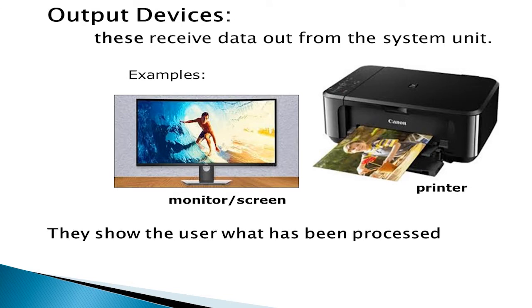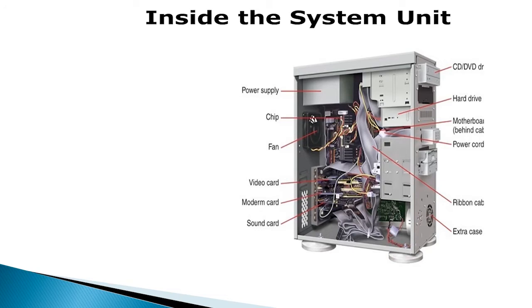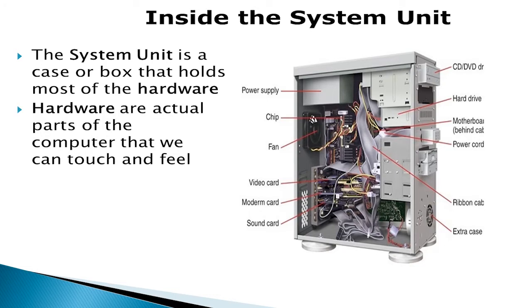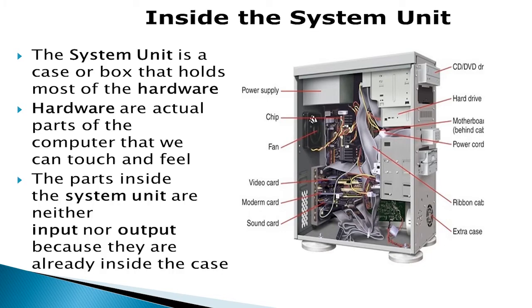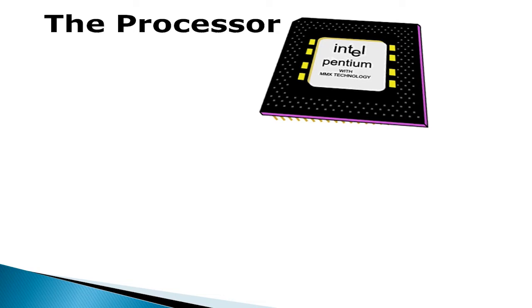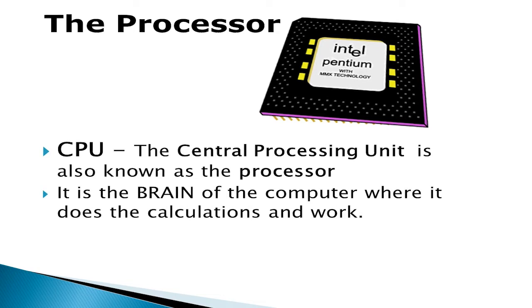This shows the user what has been processed. The system unit and what it contains or holds — we will also introduce the term hardware and what it means in the system. Hardware are parts of the computer that we can touch and feel. The parts inside the system unit are neither input nor output because they are already inside the case. We now shift our attention to the brain of the computer, the CPU or the central processing unit. This is where raw data is processed and the results are then output.